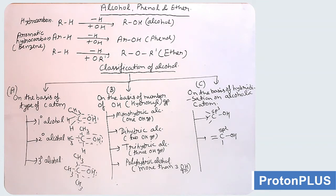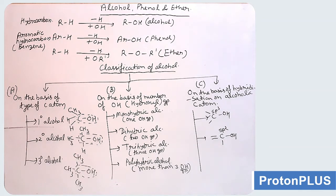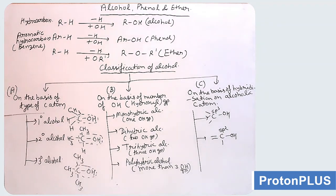Next, the classification we will take is on the basis of hybridization of the alcoholic carbon atom. When the alcoholic carbon atom is SP3 hybridized, that is a saturated alcohol. Next, when the alcoholic carbon atom is SP2 hybridized, one pi bond is there on the alcoholic carbon atom — that is SP2 hybridized alcohol.